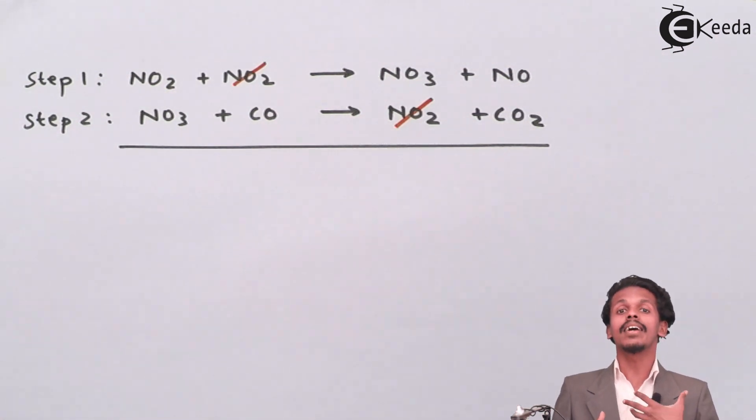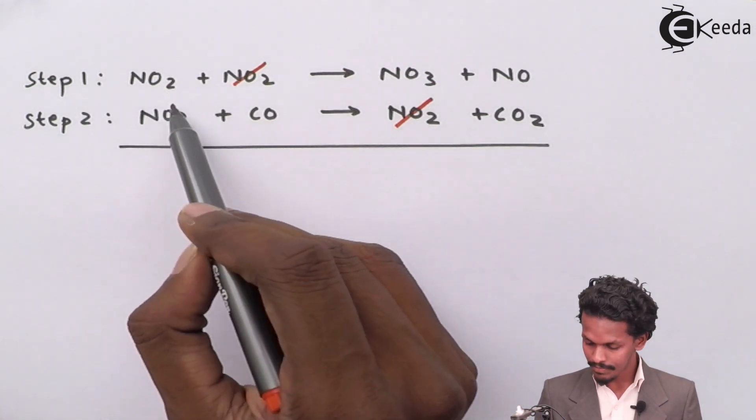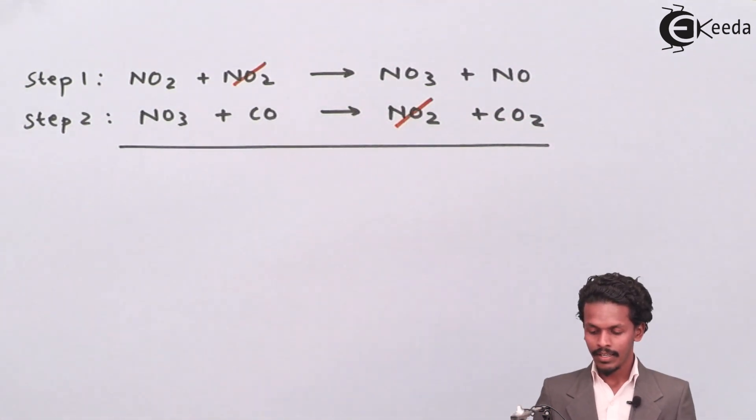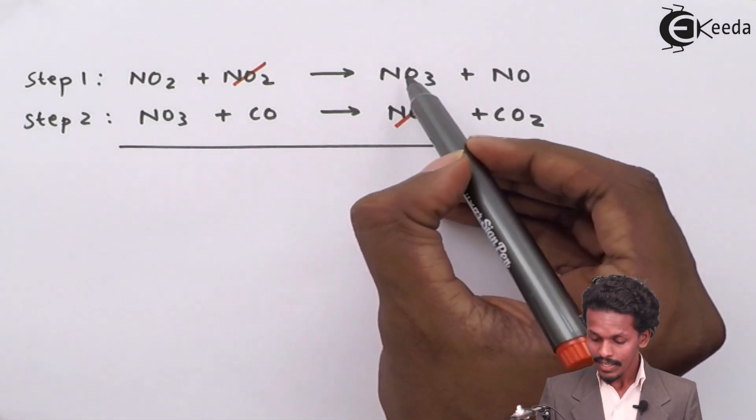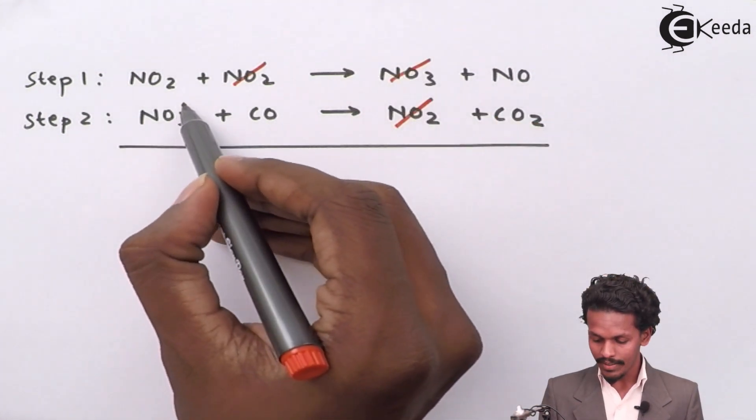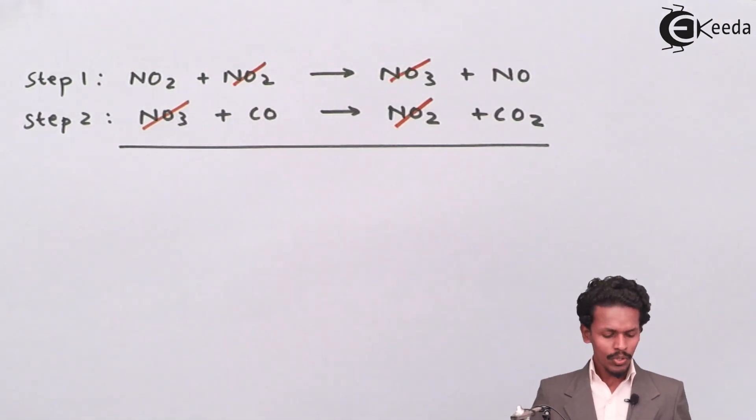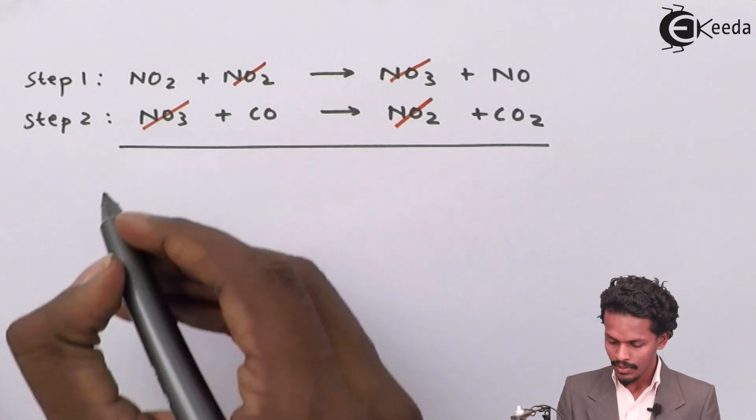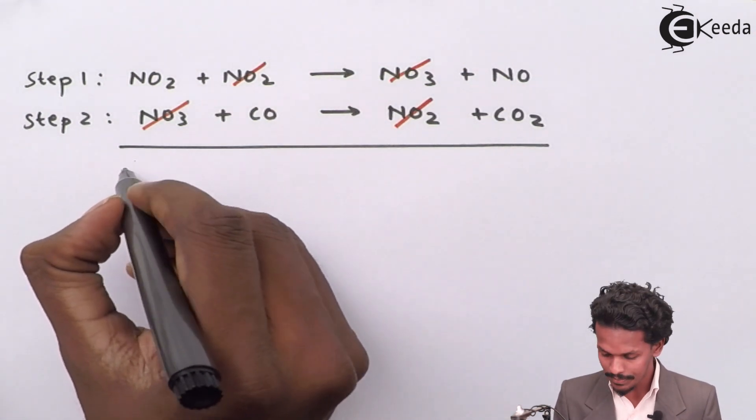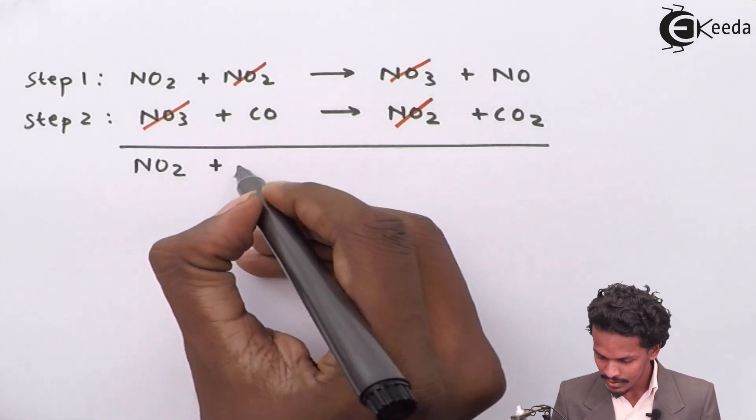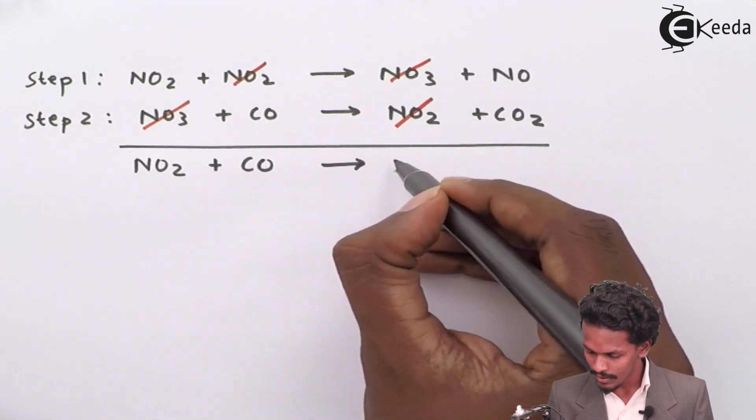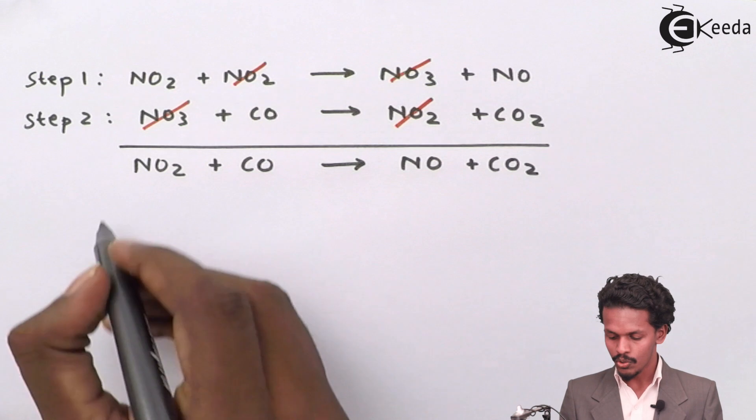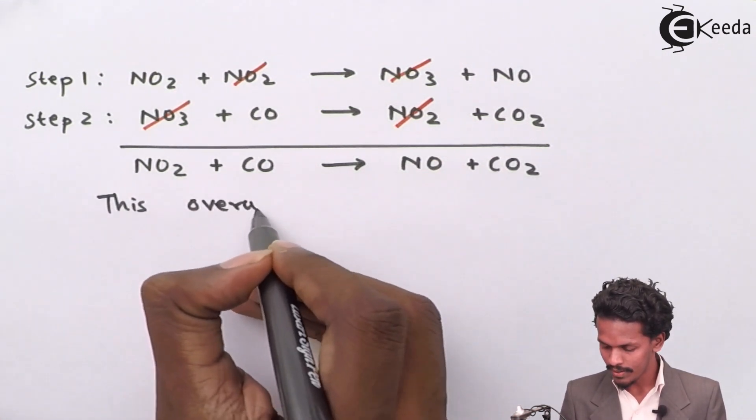Let us see if other elements in the form of atoms or molecules are also there that could eliminate each other in this overall reaction. Yes, I can see NO3. This NO3 will be eliminated from the left-hand side and from the right-hand side. So now the overall equation is NO2 plus CO will now give you NO plus CO2. This is the overall reaction.